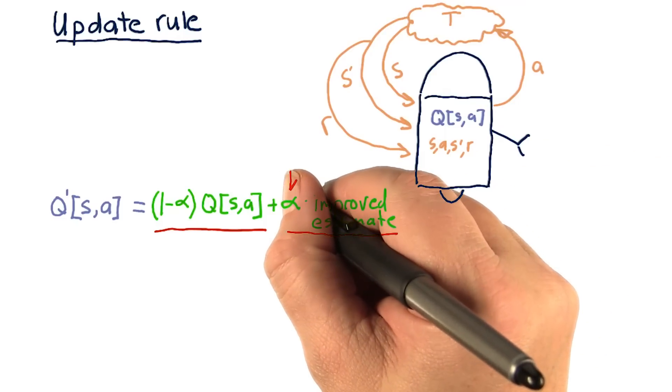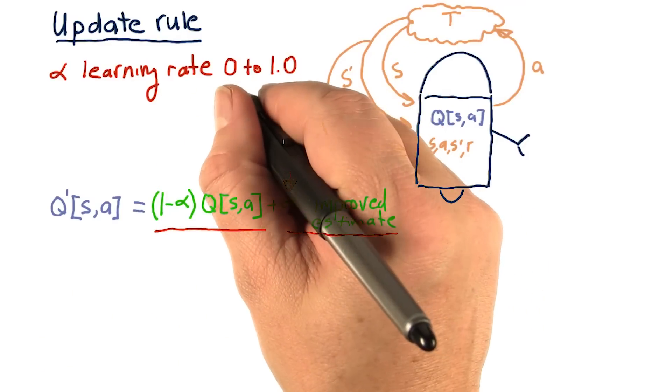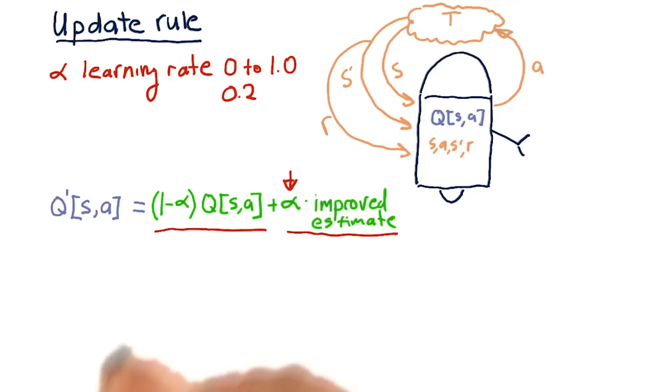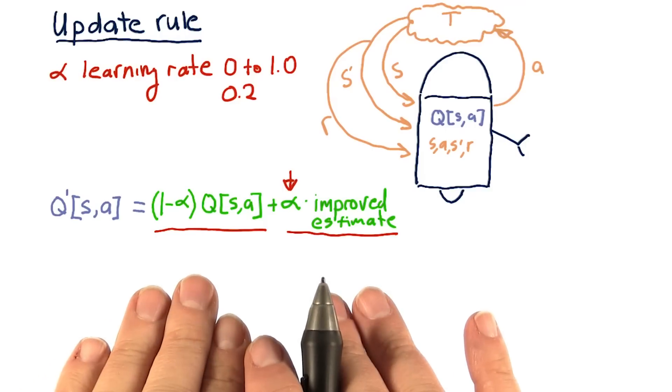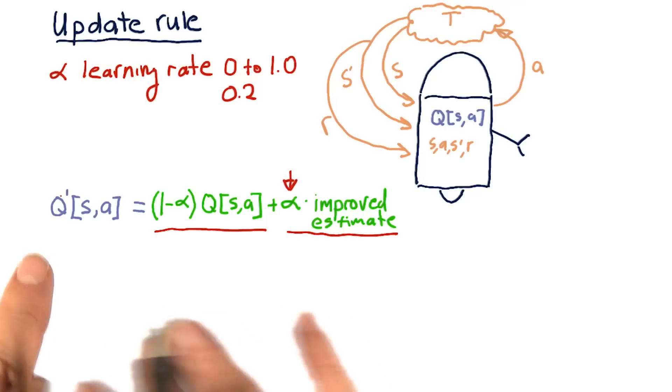And to combine them, we introduce this new variable alpha. Alpha is the learning rate. Alpha can take on any value from 0 to 1, usually we use about 0.2. And what that means is, in our new improved version of Q, which I indicate over here as Q prime,